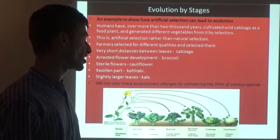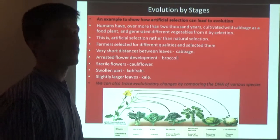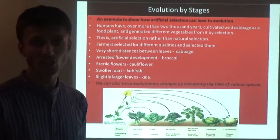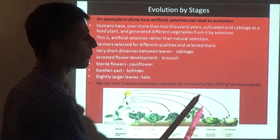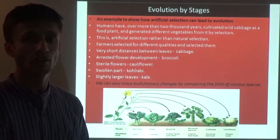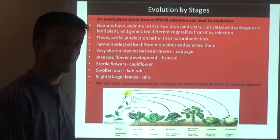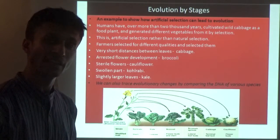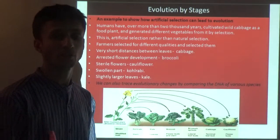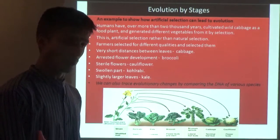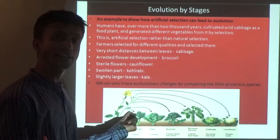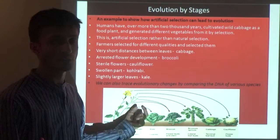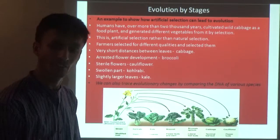We can also trace evolutionary changes by comparing the DNA of various species. Evolutionary relationships can be understood by comparing DNA - for example, comparing crocodile DNA to human beings - and this is how we can understand how closely the DNA of different species is related.